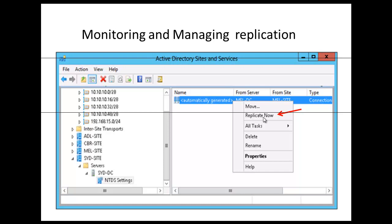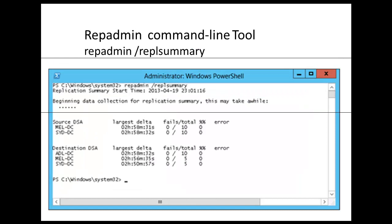Clicking Replicate Now causes the domain controller to replicate with each of its replication partners. It is also possible to manage Active Directory replication using the RepAdmin command-line tool. For example, you can use RepAdmin with the Replication Summary option to view a summary of domain controllers' replication with replication partners, as shown here. This view allows you to determine when replication has failed and the largest period between replication events.